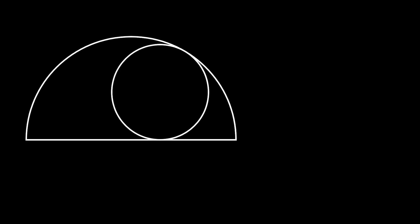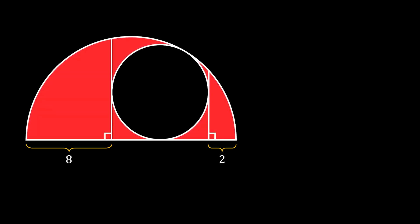Let's start with a half circle and inscribe a full circle inside it so that it touches the diameter of the half circle and its arc. Now let's set two perpendicular lines to the diameter of the half circle so that they are touching the full circle. If we know that the distance between the left perpendicular line and the left corner of the half circle is 8, and the distance between the right perpendicular line and the right corner is 2, can we find the value of the red shaded area?